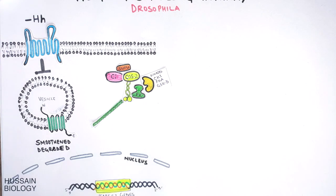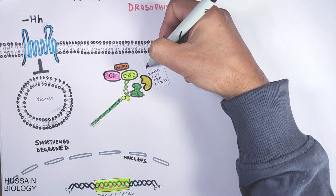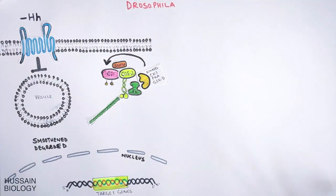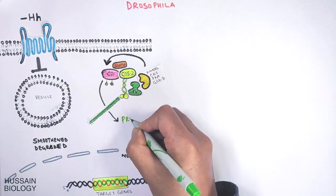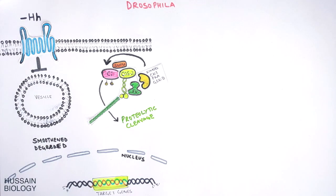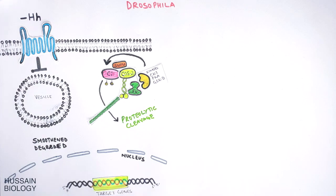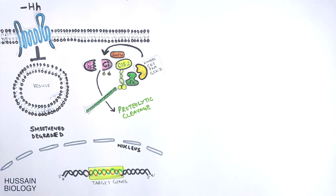After that, the three kinases CK1 kinase, PKA, and GSK3 phosphorylate the Ci protein. Then we see the phosphorylation of Ci protein marks the Ci protein for proteolytic cleavage. The protein called the Slimb or Slime protein of SCF complex binds to the Ci protein and mediates the proteolytic cleavage of Ci protein.